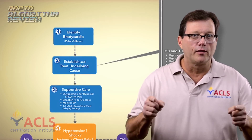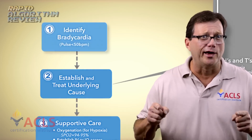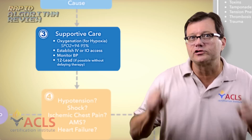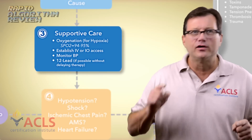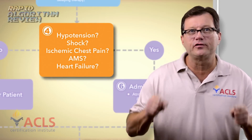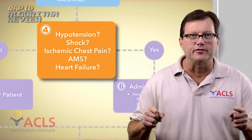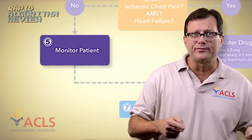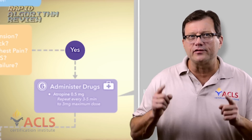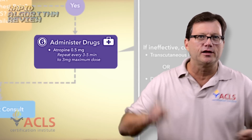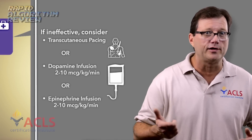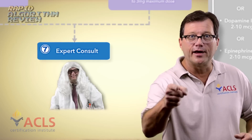Quickfire review: One, your patient's bradycardic. Two, try to figure out why they're bradycardic, and start your supportive care — oxygen, IV, 12-lead. Next, is this persistent bradycardia causing hypotension and shock, altered mental status? No? Fine — monitor them, get some more lab tests, maybe seek an expert consultant. If they are showing signs of hypoperfusion, give drugs immediately — first drug up, atropine sulfate. If that doesn't work, consider dopamine or transcutaneous pacing. Lastly, get an expert involved.